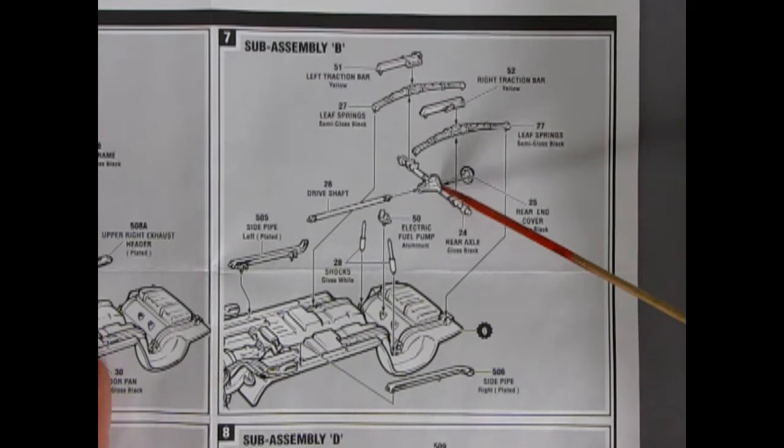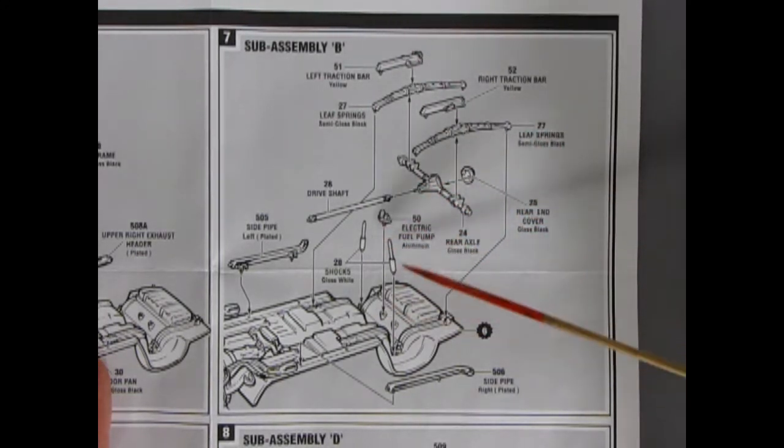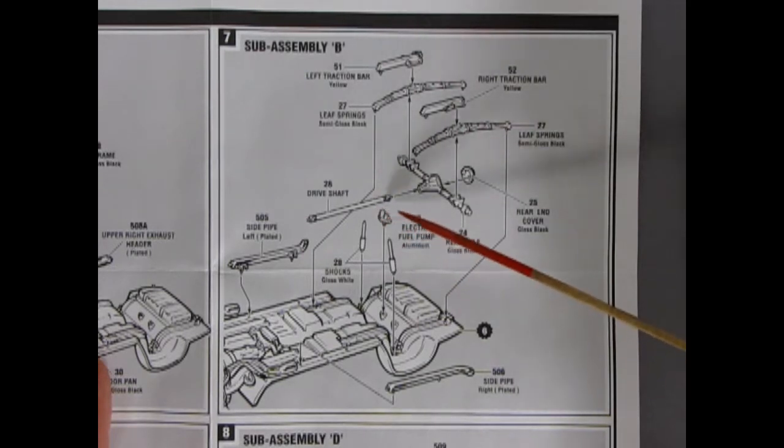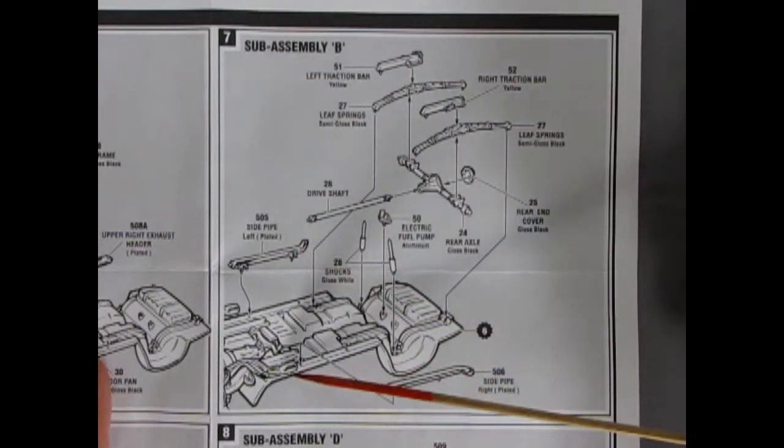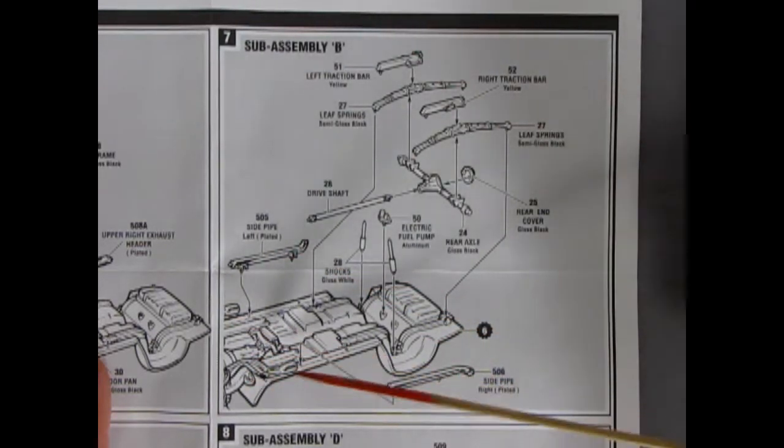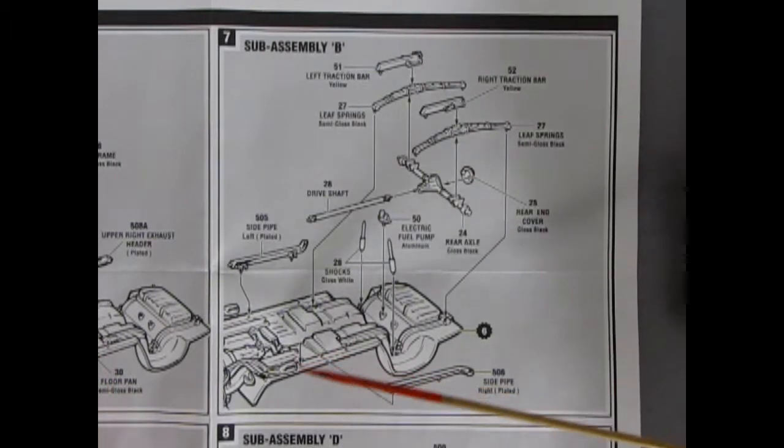The rear end cover going on to the rear axle. So, we've got this little electric fuel pump back here, which is quite unique. The drive shaft. The shock absorbers going into the back. And then we have these nice side pipes, which we'll attach to our headers here at the front of sub-assembly C, or step number six.